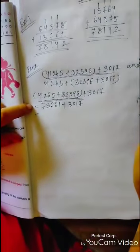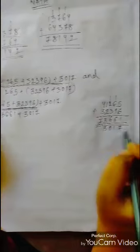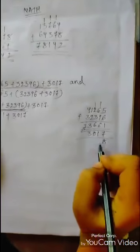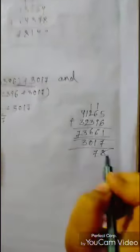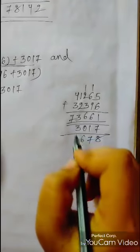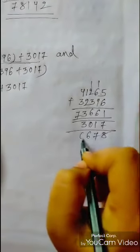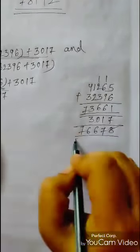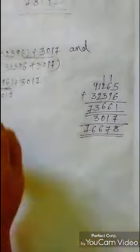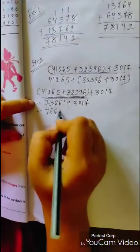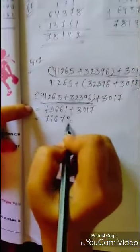Now we add 73,661 plus 3,017. 1 plus 7 is 8. 6 plus 1 is 7. 6 plus 0 is 6. 3 plus 3 is 6. Then 7. Our answer is 76,678.